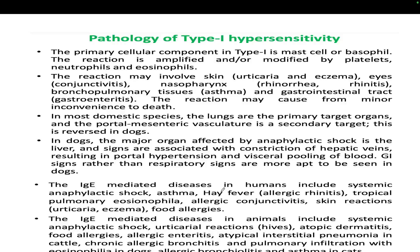Asthma is one of the most common Type 1 hypersensitivities — because of some allergen, there is increased IgE production causing a hyper-immune response and difficulty breathing. Other examples include conjunctivitis, skin reactions, and food allergies. The most common manifestation to remember is anaphylactic shock. Other examples include atopic dermatitis and hay fever.